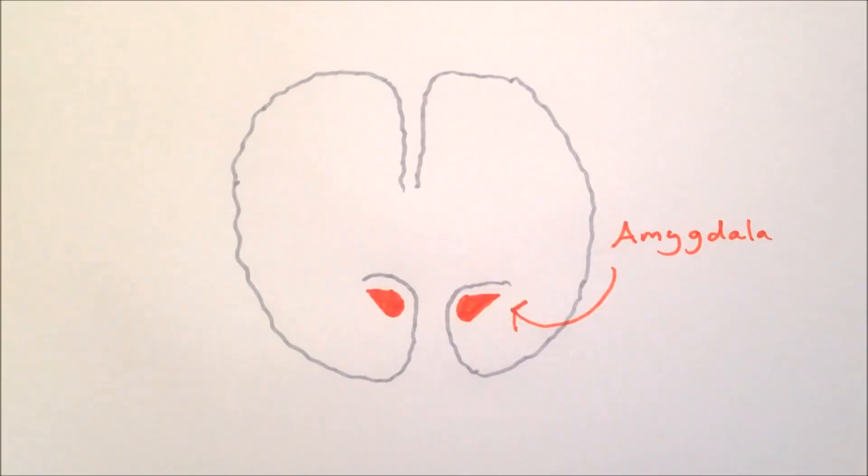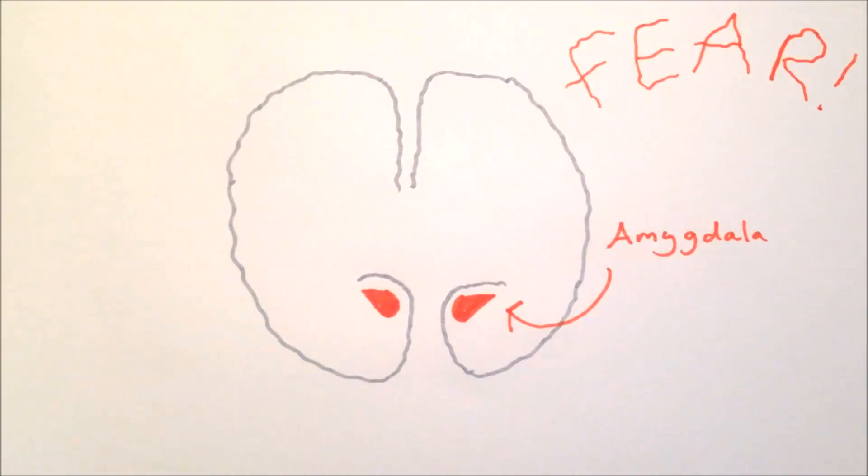The amygdala, meaning almond shaped, is a collection of nuclei within the brain. It is a paired structure with one in each hemisphere. The amygdala is thought to play a role in a number of different functions, but it is most commonly implicated in the control of fear.